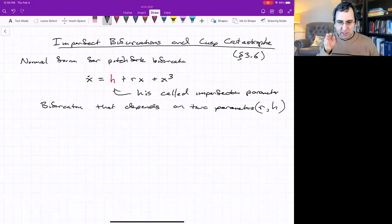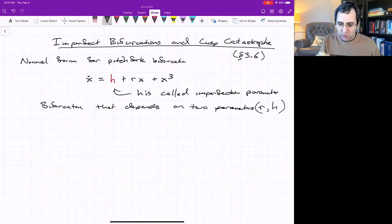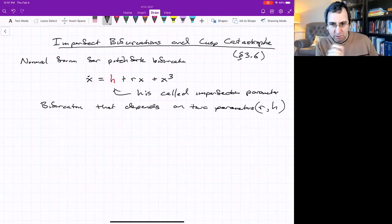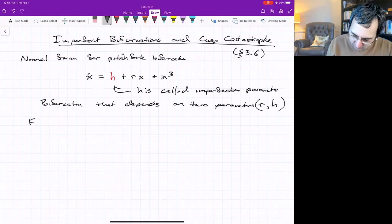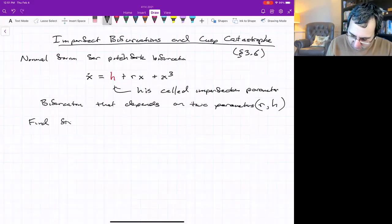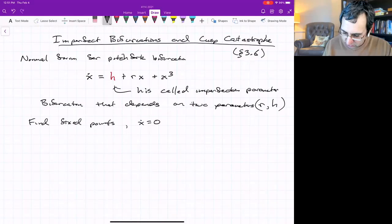It's a bifurcation that depends on two parameters, r and now h. Sometimes we'll look at if we were to keep one of the parameters fixed, like r and vary h, or if we were to fix h and vary r, which is what we initially looked at. But you can look at both. This is harder to analyze in detail.